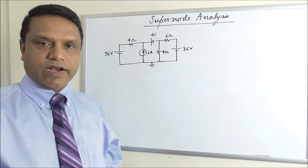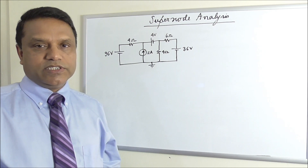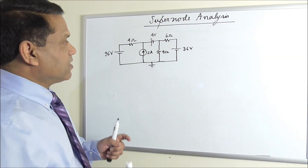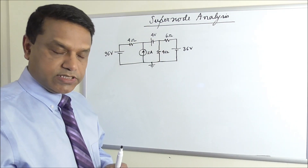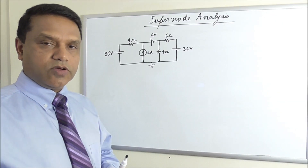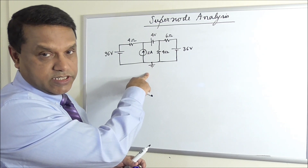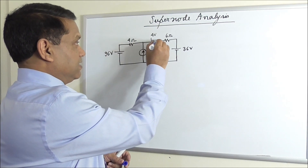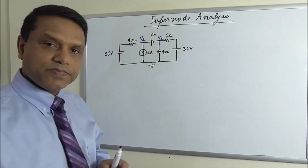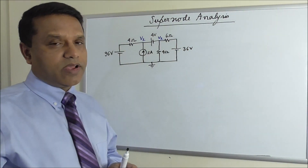To do nodal analysis, also called the node voltage method, you have to first assign voltages at nodes which have at least three branches connected to them. Let's find out how many such nodes we have. We have a node here with three branches connected, another node here with three branches connected, and then the ground node where multiple branches are connected. In every circuit for node analysis you have to assume a reference node, usually the ground node, which has a voltage of zero volt — so no voltage needs to be assigned there. We need to find the voltages at the other two nodes.